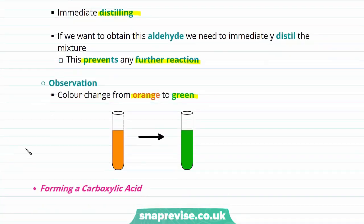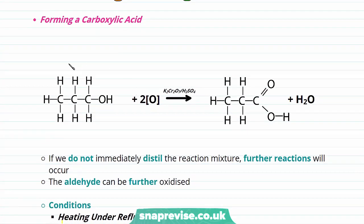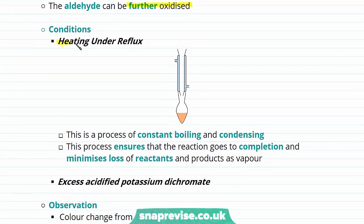The second situation is when we form a carboxylic acid. Again, we have our propan-1-ol molecule. This time it's being oxidized, again by the same oxidizing agent — acidified potassium dichromate — to form a carboxylic acid, with that carboxylic acid functional group. If we do not immediately distill the reaction mixture, further reactions will occur — further oxidation of our aldehyde will occur. The specific conditions required for this are that we must heat under reflux. Heating under reflux is a practical technique which is a process of constant boiling and condensing.